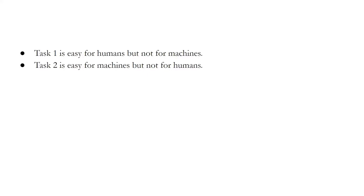On the other hand, task two, which is extremely easy for machines like calculators and computers, is very difficult for humans. Now what is going wrong? Why is there such a mismatch?